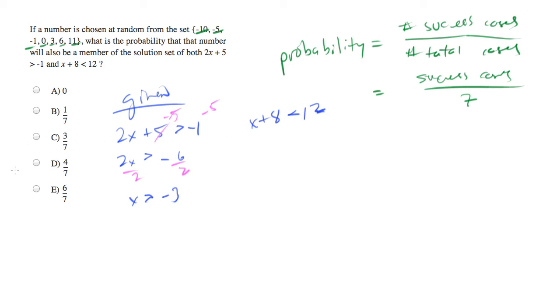And let's do the same thing to the other equation. Subtract 8 from both sides and what we'll end up with is x is less than 4.